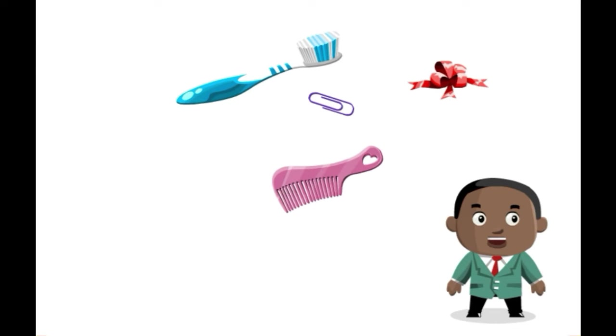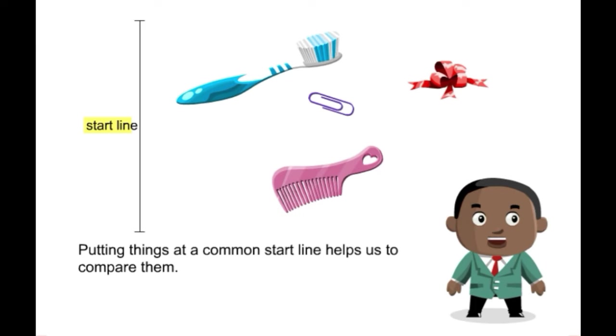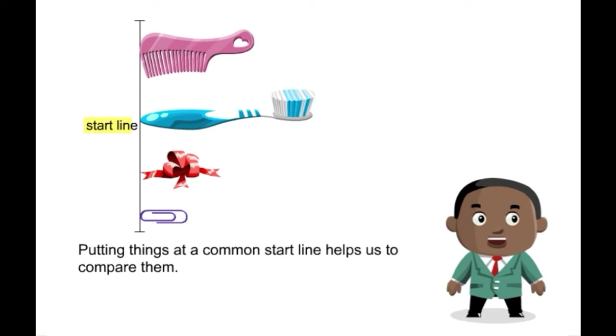Using a start line. A common starting point makes comparison of objects easier. Let's see the example in the next video. Let's compare these items. Which is the longest? Which is the shortest? It is difficult to compare the items like this, so we will use a start line to help us. This is the start line. Put the things at the common start line — it helps us to compare them. Now let's compare. The toothbrush is the longest. The paper crease is the shortest.